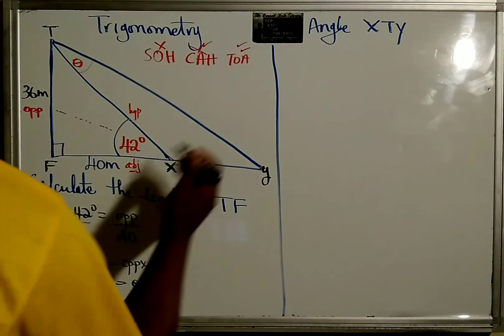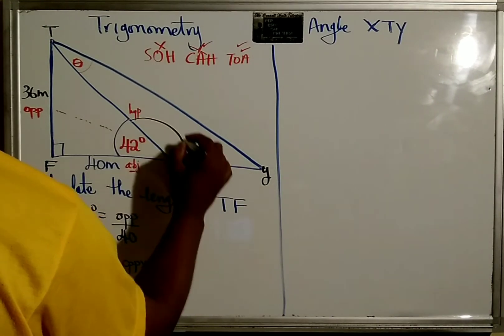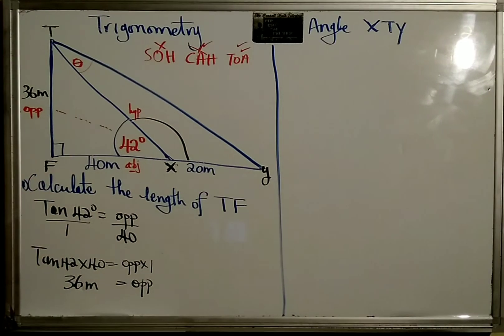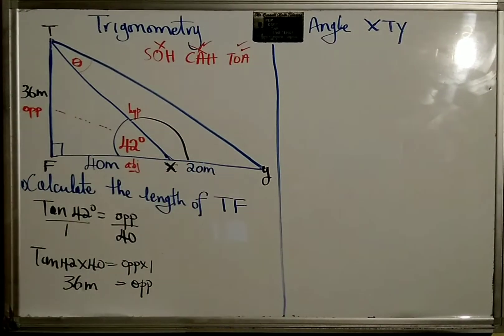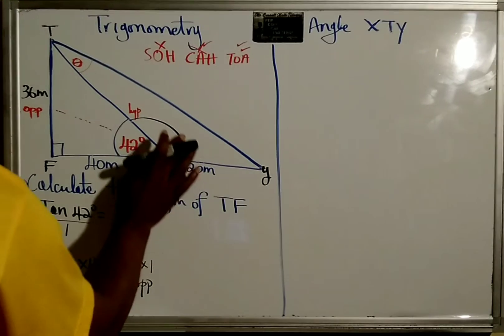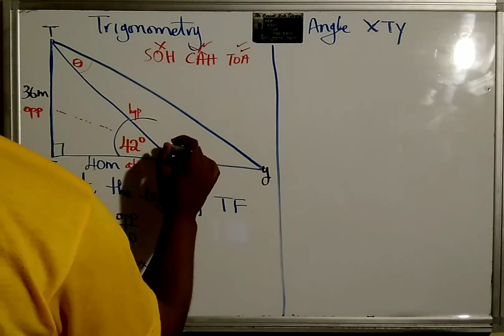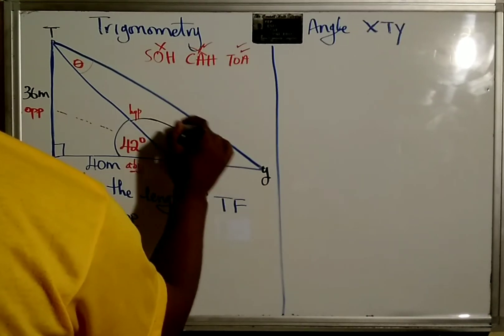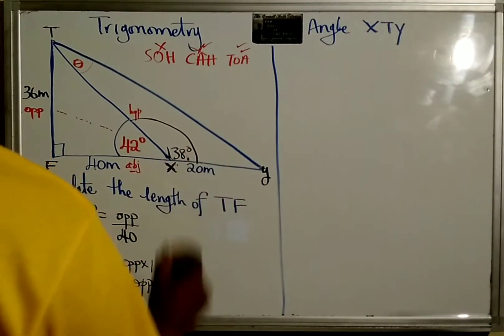Let's just find this one first since it's going to be a bit easier. This is an angle on a straight line, so angles on a straight line add up to 180 degrees. This angle here is 138, so this angle here is 130.